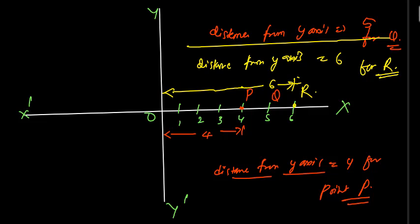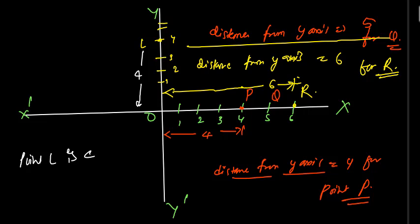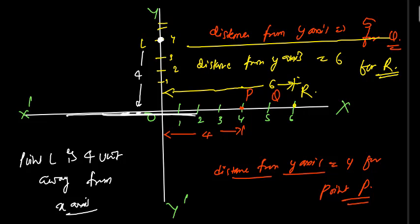Similarly, if there is a point on the Y axis — let us take point L — it is at position 4 on the Y axis. So the distance of point L from the X axis is 4 units. That is, L is 4 units away from the X axis. You got it?